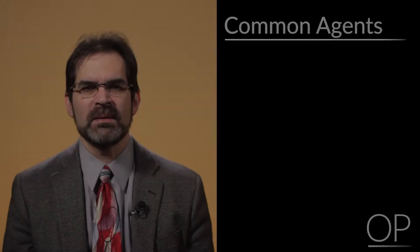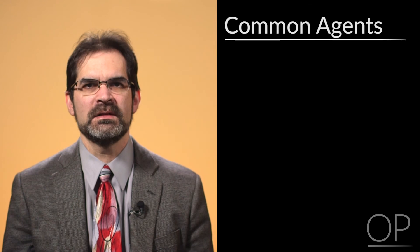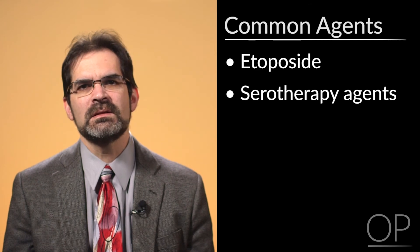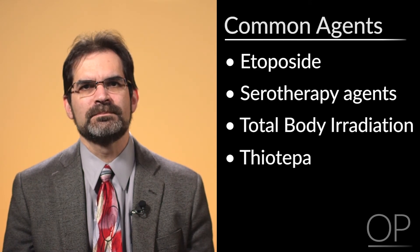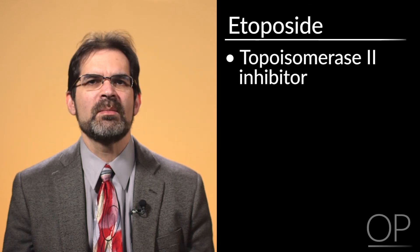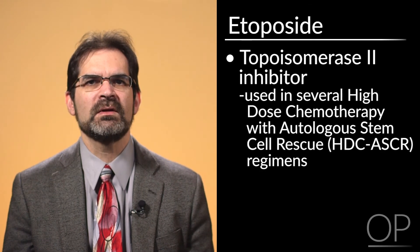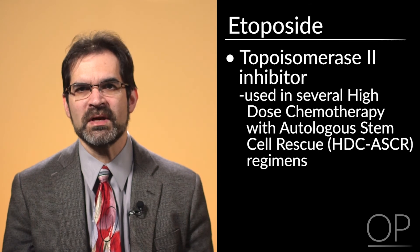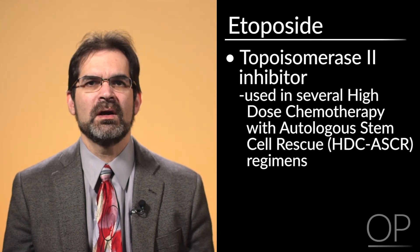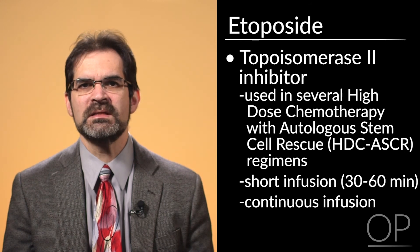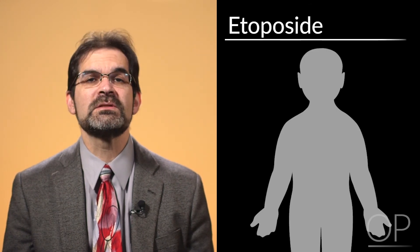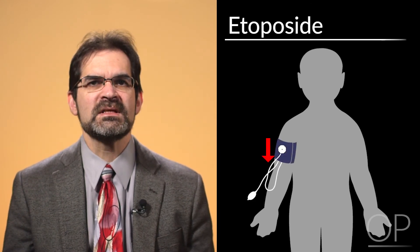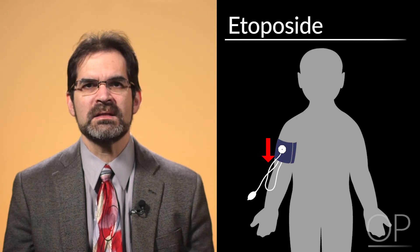Now let's review a few more important side effects: etoposide, serotherapy agents, total body irradiation, and thiotepa. Etoposide is a topoisomerase II inhibitor used in several high-dose chemotherapy regimens with autologous stem cell rescue. It can be given as a short infusion over 30 to 60 minutes or as a continuous infusion. The major acute issue associated with etoposide is hypotension, which can often be managed by slowing the infusion rate, sometimes by as much as 50%.